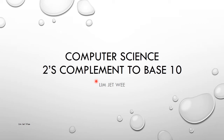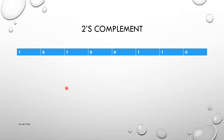We are still in computer science, and we are still in the two's complement topic. This time we want to convert two's complement to base 10, which is our normal number system. You are presented with a question — let's say in your test or examination — and you are given this string of bits: 1 0 1 0 0 1 1 0.